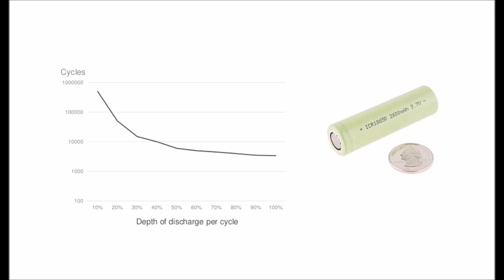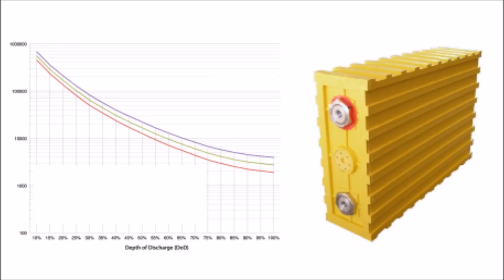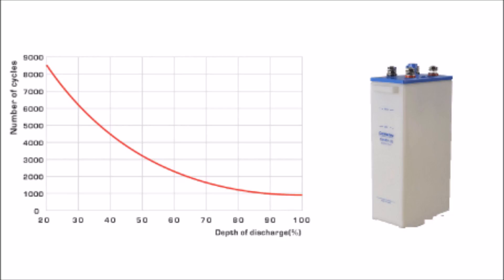This is true for every type of battery. Here is a lithium ion battery — at 10% depth of discharge, it delivers well over 100,000 cycles, dropping down to about 5,000 if you discharge it all the way to zero. Here's a lithium iron phosphate battery, which has the same problem. Although it can cycle more times overall, going all the way to zero still shortens the life greatly. And here's a nickel iron battery for good measure — same type of thing: the more you discharge it, the lower the life cycles.